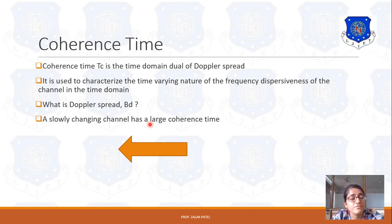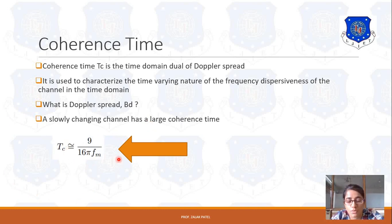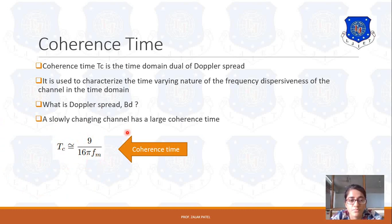Similarly, for the reverse case, a fast-changing channel has a relatively low value of coherence time and a high value of Doppler spread, because a fast-varying channel takes very small time compared to a slowly varying channel. If you want to calculate coherence time, it is denoted by TC and given by TC equals 9 upon 16 pi FM, where FM is the frequency of that particular signal. This can be asked as a one-marker question.